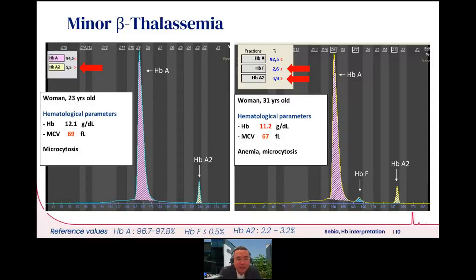Here are case examples of minor beta thalassemia seen with capillary electrophoresis. For the first patient, a 23-year-old woman with reduced MCV, you can clearly see hemoglobin A2 is increased. In the second case, hemoglobin F is present and increased — remember, in a normal profile it appears only in trace amounts. This patient has more hematological manifestations, including reduced hemoglobin.